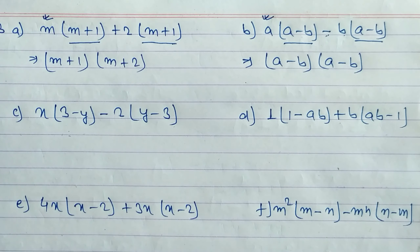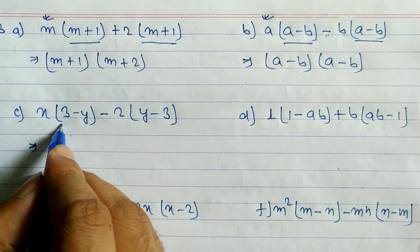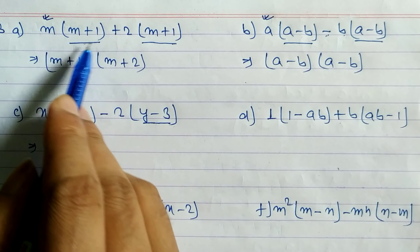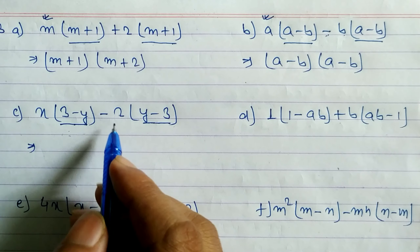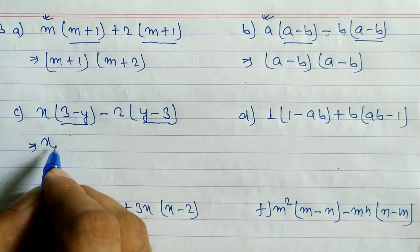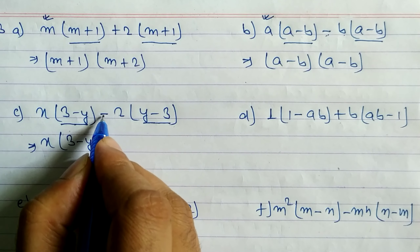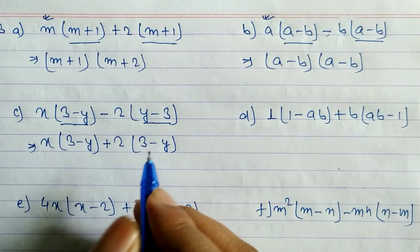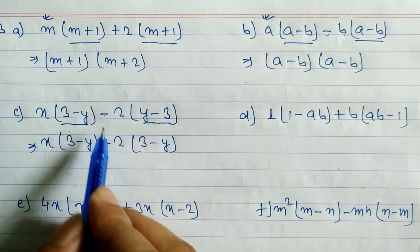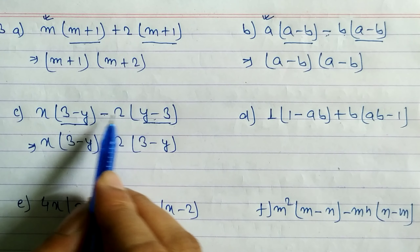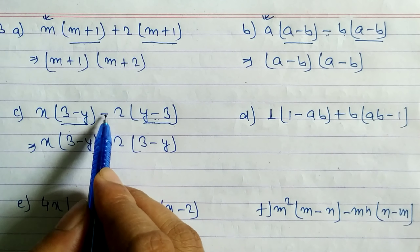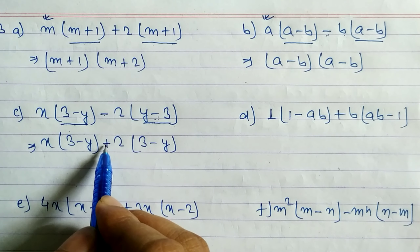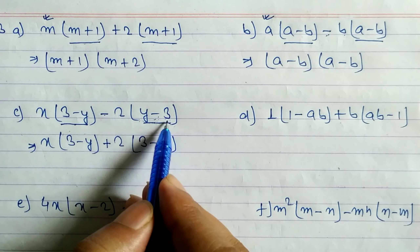Now look at question c. You can see here it is 3 minus y, but here is y minus 3 — both are not the same. So we cannot take common directly. To make them the same, we have to take minus as common. So we can write x(3 minus y), and in the place of minus we write plus. We interchange y minus 3: if minus we write plus, if plus we write minus, because we are taking minus common from here. When you take minus common, minus times minus becomes plus. So we have to change the sign and interchange the places.